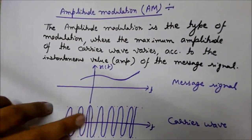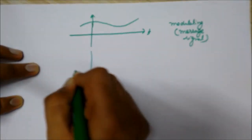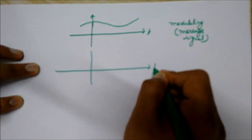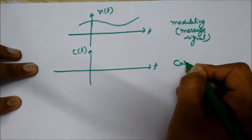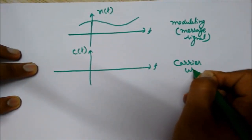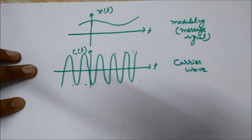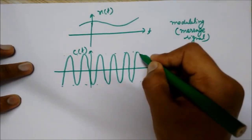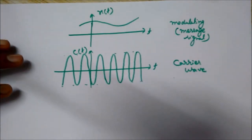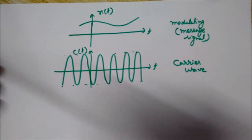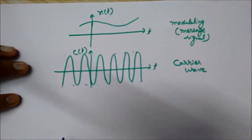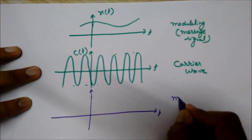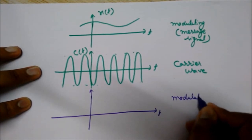If we denote the modulating signal by x(t) and the carrier wave by c(t), the carrier wave has a high frequency and constant amplitude. In FM, we vary the frequency of the carrier wave as per the variations in the amplitude of the message signal. Let's see — I'm drawing the modulated signal.